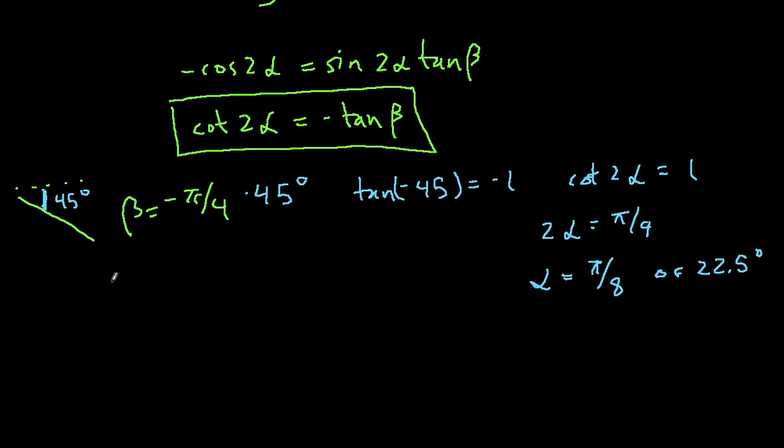Similarly, if we've had something like beta equals, let's say, 60 degrees, so that's minus pi over 3, or 60 degrees, if we solve for that, we get alpha should equal 15 degrees, or pi over 12.